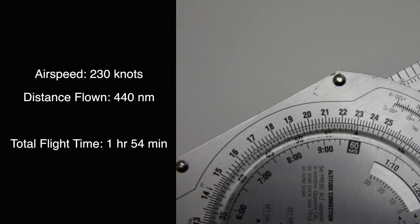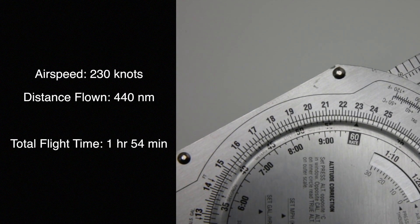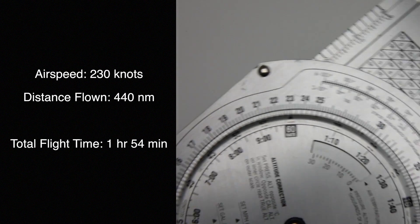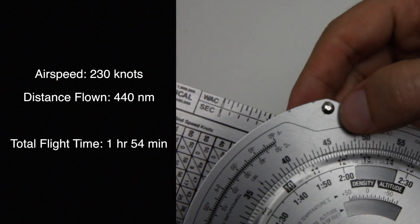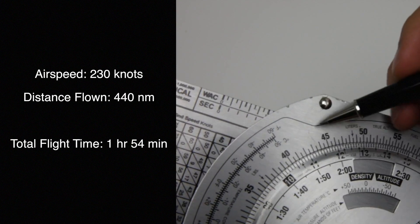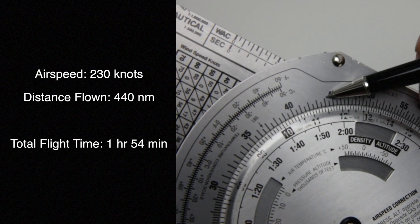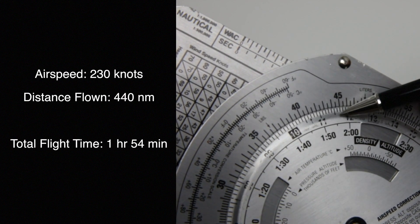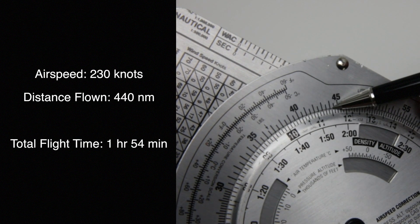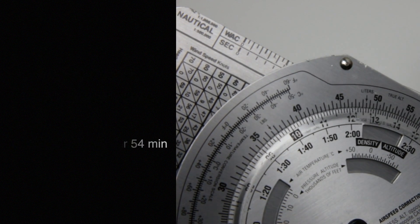Set the rate to 230 and we're doing 440 miles, so around on the outer scale to 440, and that's going to be one hour and 54 minutes, more or less.